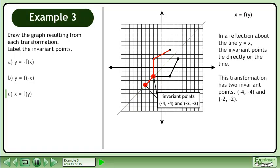In a reflection about the line y equals x, the invariant points lie directly on the line. This transformation has two invariant points: (4, 4) and (-2, -2).